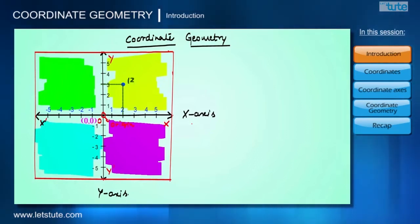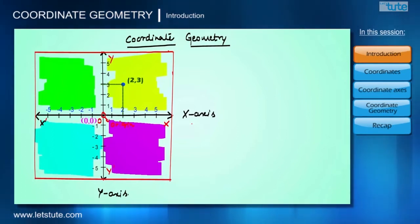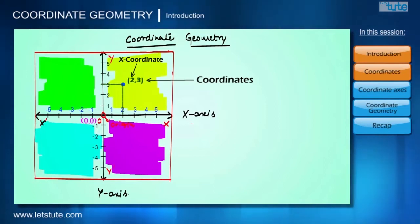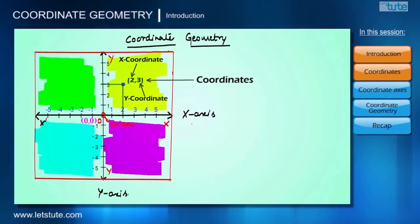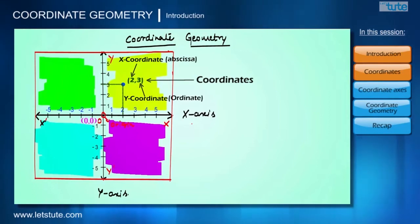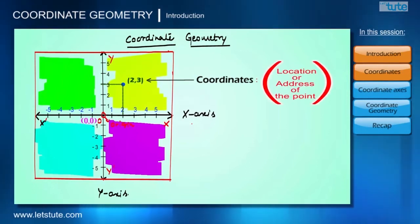So its location is represented as two units for x and three units for y. This kind of representation is called coordinates. The value on the x-axis is called the x-coordinate, and the value on the y-axis is called the y-coordinate, also known as the ordinate.